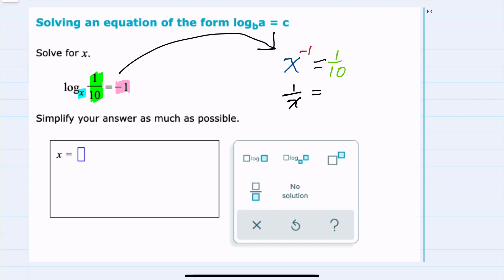And since we know that this equals 1 over 10 on the other side, we can now solve for x. And we can see that x would have to equal 10.